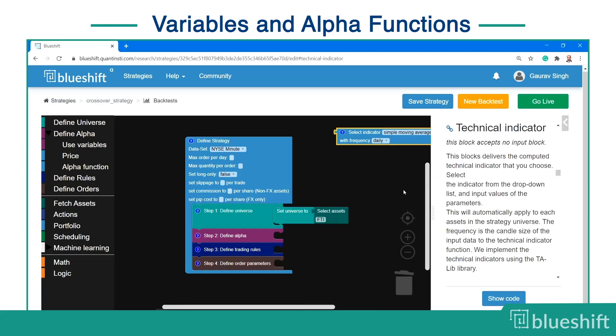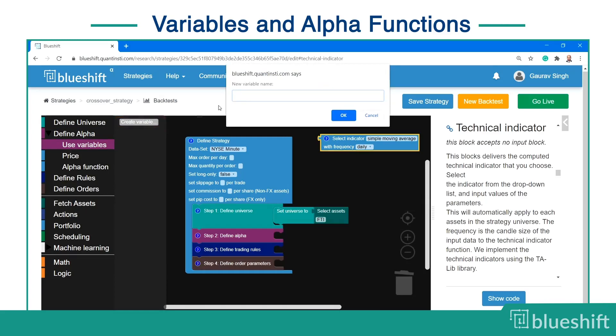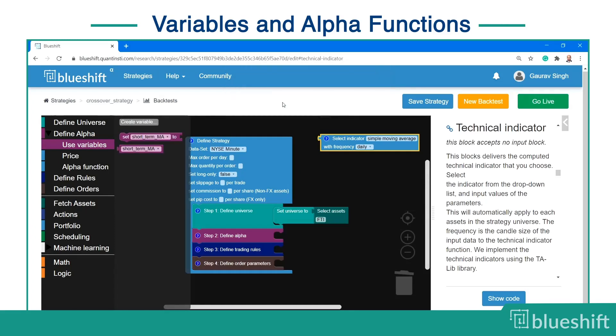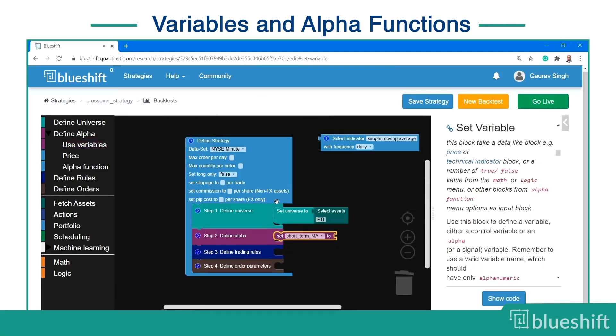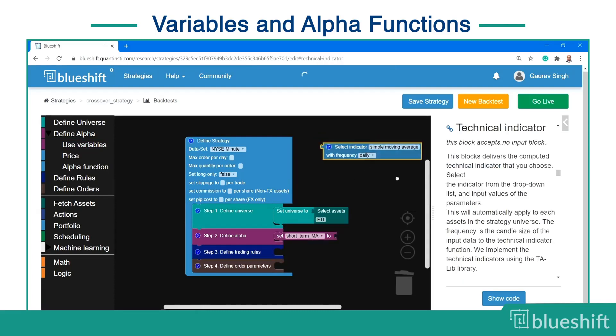To create the short-term MA variable, click on the define alpha button. Then click on use variable and then create variable. You will be asked for the variable name. Type short-term MA and press OK. The variable is created in the side panel. Select and drag the set short-term MA block and connect it to the define alpha step and place the 50-day moving average blue block next to it.